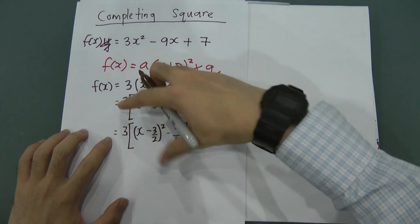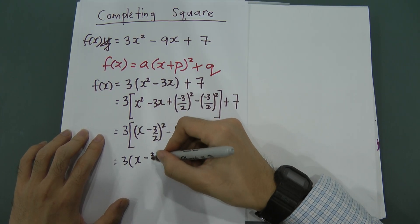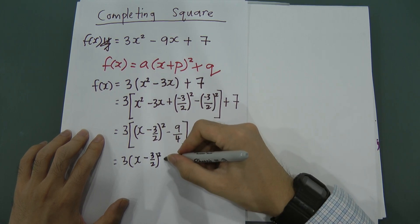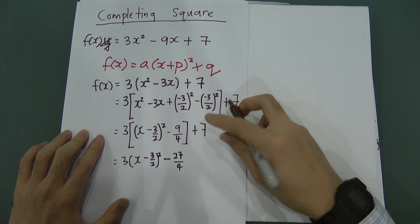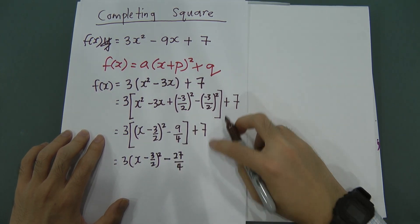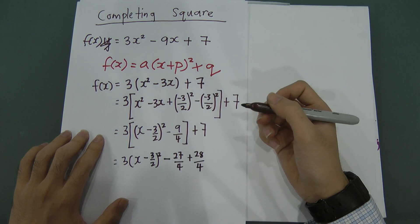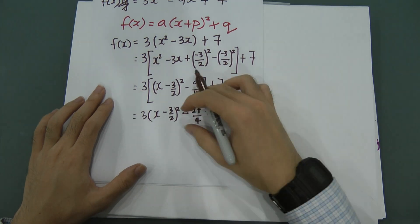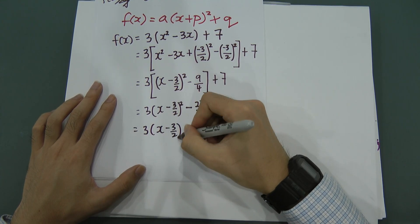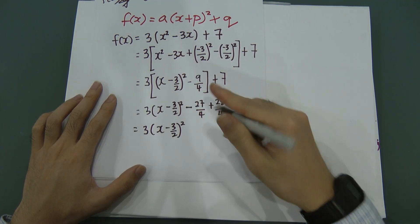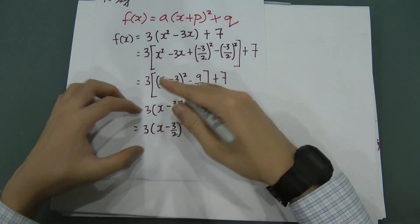Now I open up the bracket and multiply through by 3: I get 3(x - 3/2)² - 27/4. Then I make the denominators the same, so +7 becomes +28/4. Combining gives 3(x - 3/2)² + 1/4.